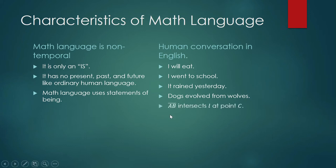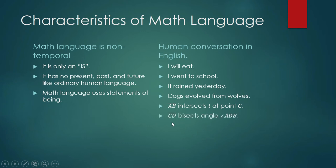Now consider this: 'The line AB intersects L at point C.' This sentence contains math language. We use small letters to name a line and capital letters to name a point. Parts of this sentence are math language, and the symbols for line segment and angle are also math symbols. However, this sentence is not entirely the language of math — it is the language of teaching mathematics. Those two things are different: the language of math and the language of teaching mathematics.